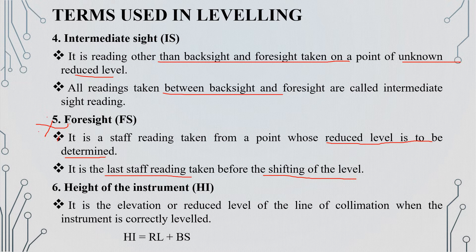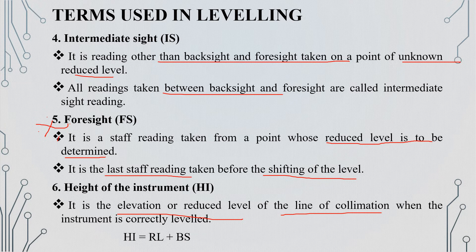The last staff reading taken before shifting the level is called foresight. The next term is height of the instrument. Height of the instrument is the elevation or reduced level of the line of collimation when the instrument is correctly leveled. Height of instrument equals reduced level plus backsight.